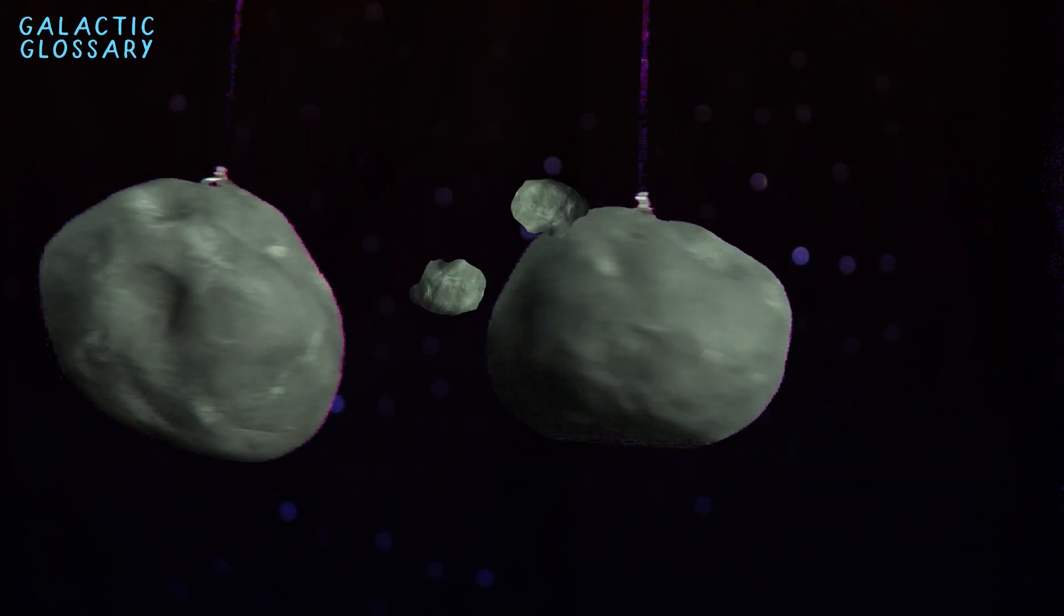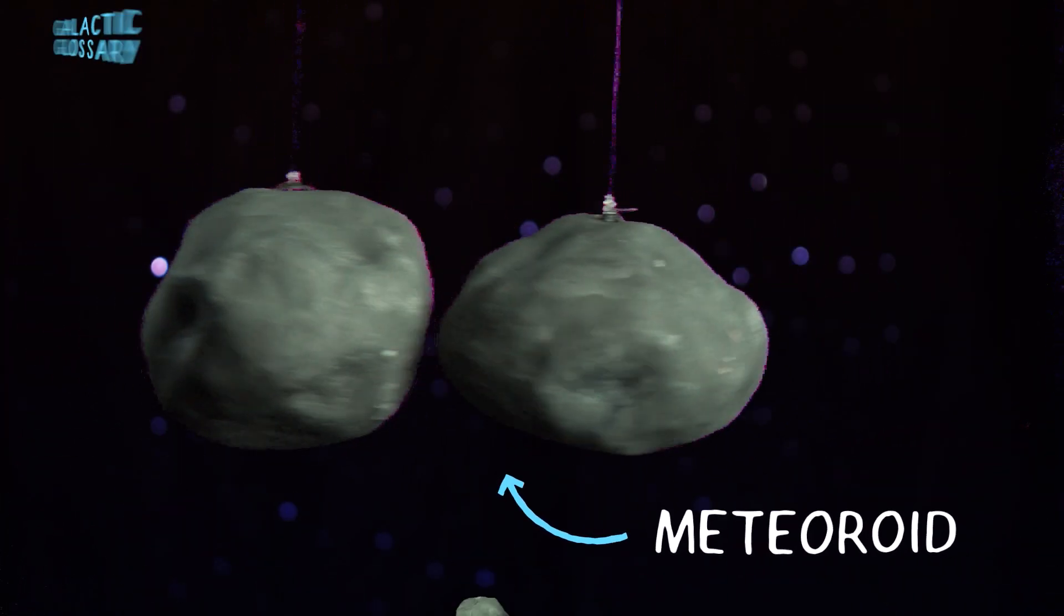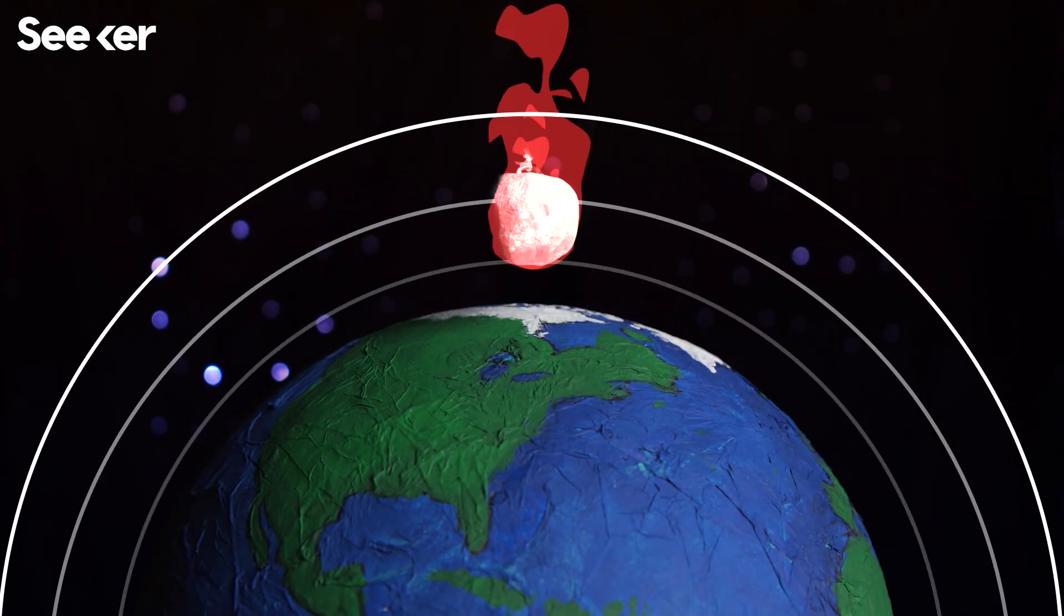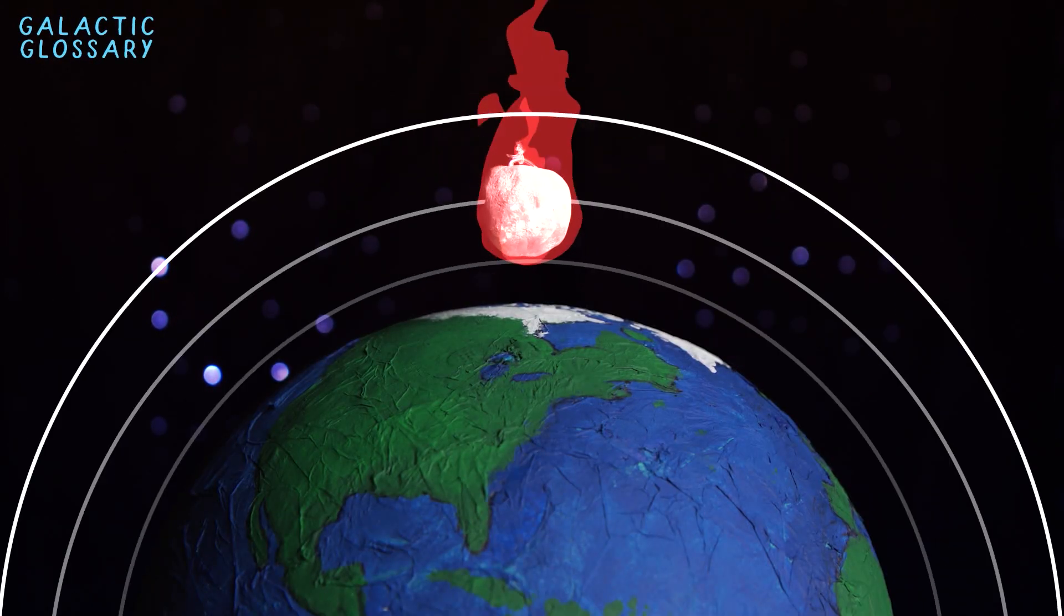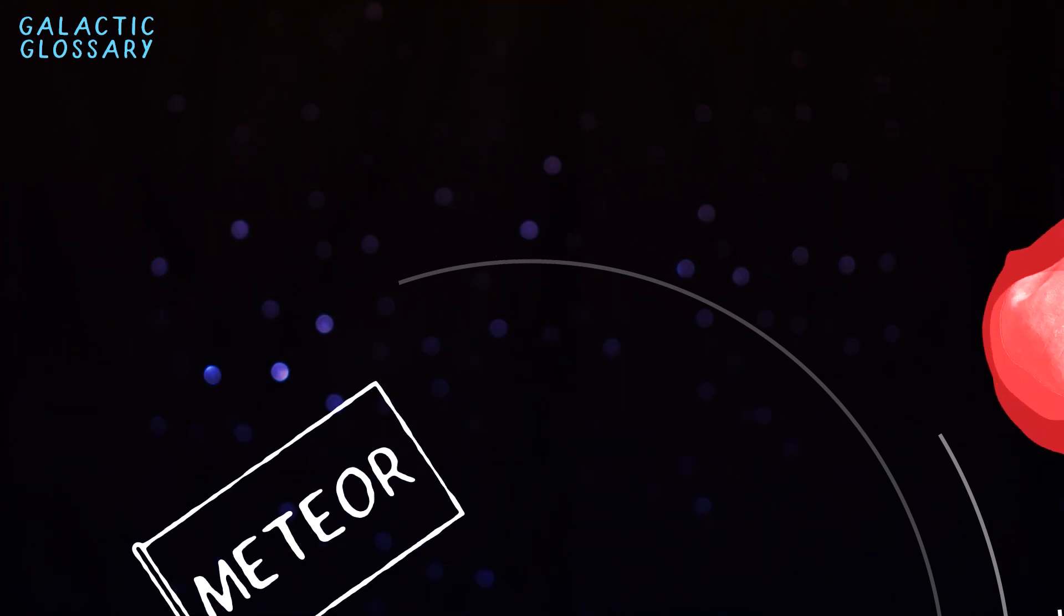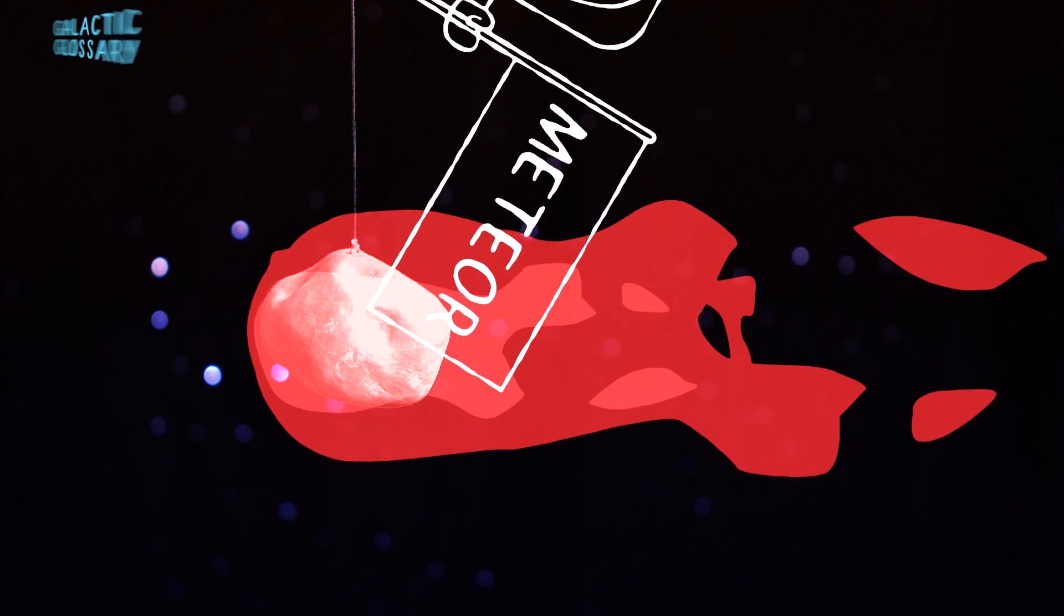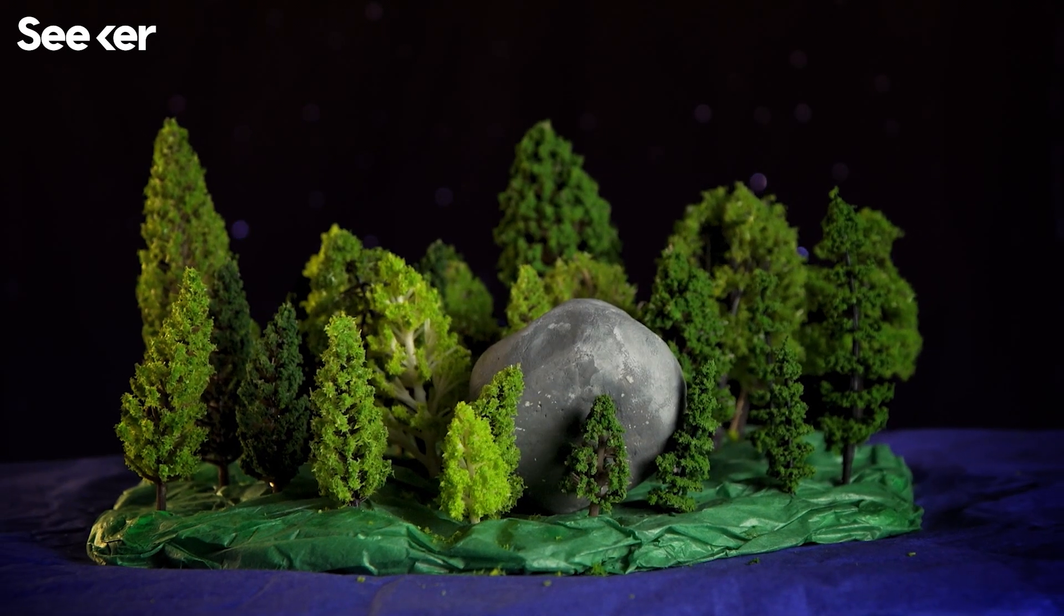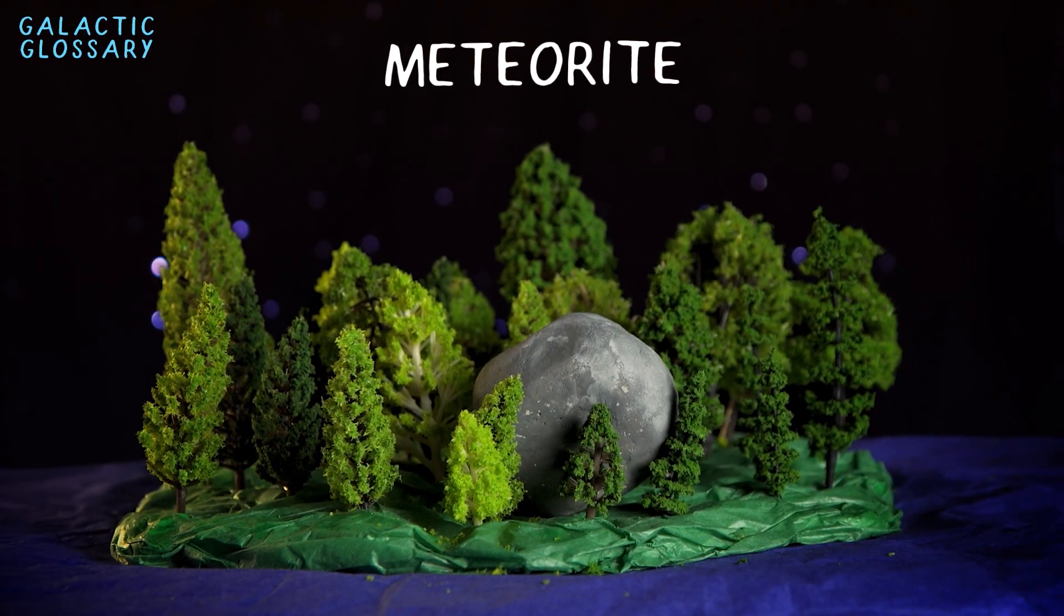Pieces of rock that break off asteroids and comets are called meteoroids. When a meteoroid enters the Earth's atmosphere, it burns up and causes friction that results in a light phenomena. The streak of light is known as a meteor or a shooting star. And if a meteoroid lands on Earth's surface, it becomes a meteorite.